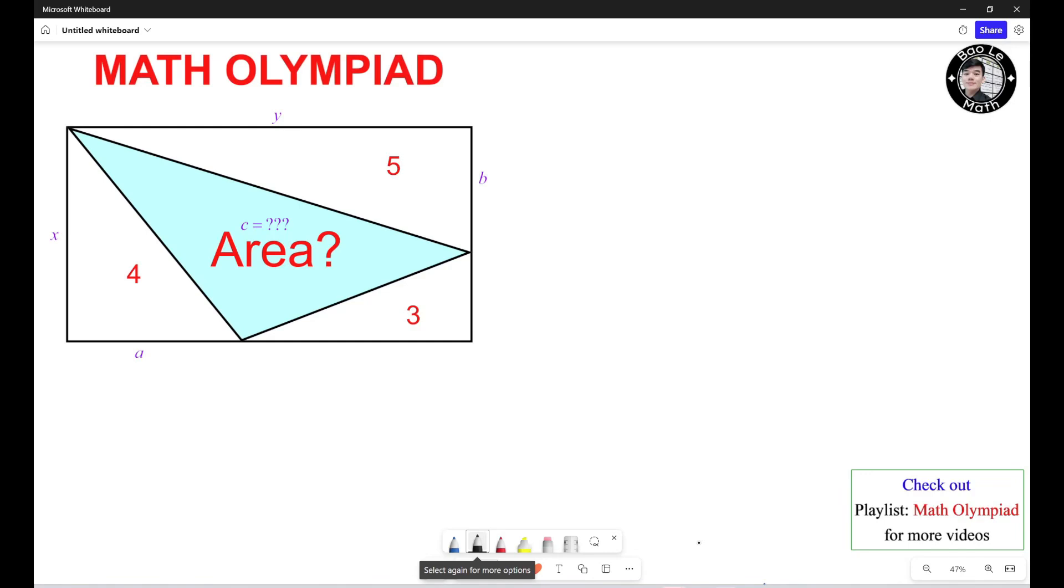Hello everyone, in this video we're gonna learn how to solve this geometry Math Olympiad problem given a rectangle and four triangles as shown in the figure. What is the area of the shaded region? Before we're gonna start let's pause the video and give it a try.